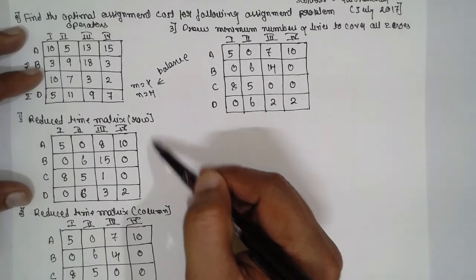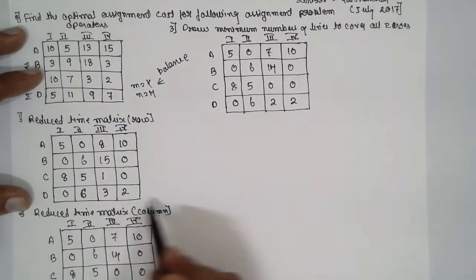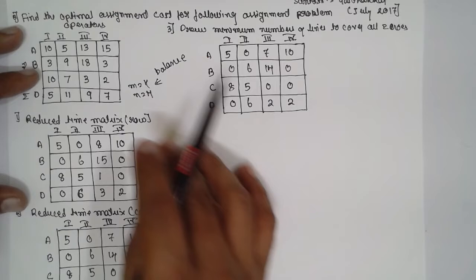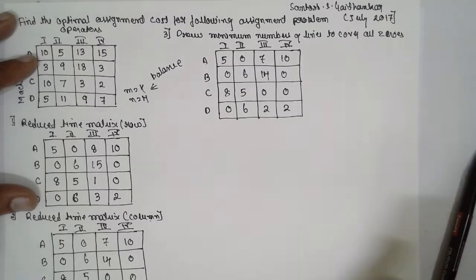Now draw the minimum number of lines to cover all zeros. Write these values here: 5, 0, 7, 10, 0, 6, 14, 0, 8, 5, 0, 0, 0, 6, 2.